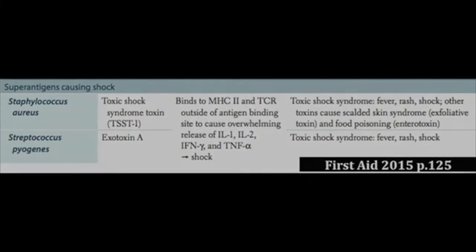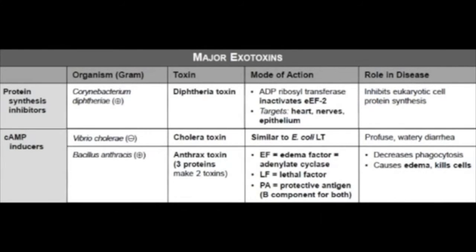Other bugs can mess with the interior workings of the cell. We can talk about ADP ribosylation of proteins, which alters the mechanics of a protein and can inactivate something important. For example, diphtheria inactivates elongation factor 2 by ADP ribosylation so the cell can no longer make new proteins. We can also have cyclic AMP induction — cyclic AMP is important for second messenger cascades and many different processes in the cell, so inducing it can mess with the cell's ability to regulate its own function.